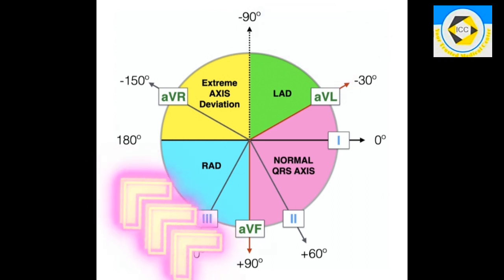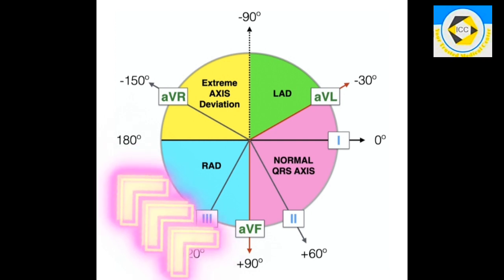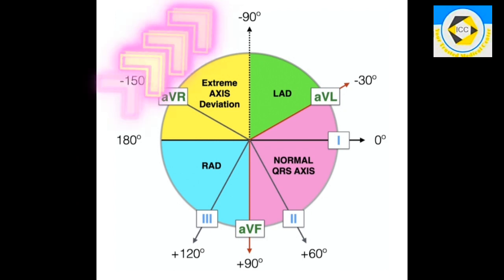And it is considered right axis deviation when it is between plus 90 to plus 180 degrees and rest is known as extreme axis or northwest axis.